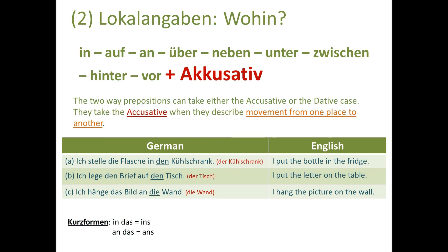Now in the second scenario we look at the accusative case. The question for accusative is 'Wohin?' — where to? These prepositions take the accusative when they describe movement from one place to another. In that case there is movement — the object or person is not still.